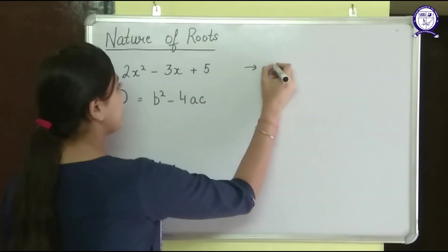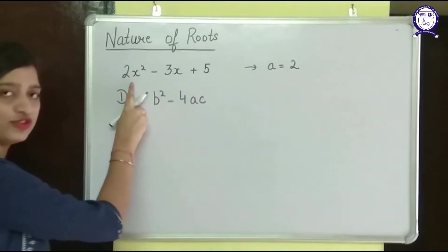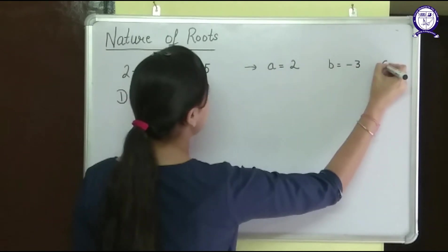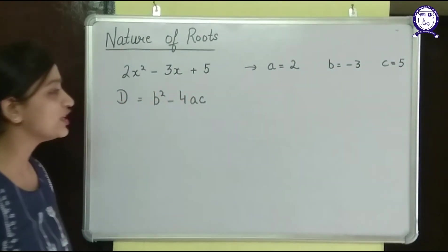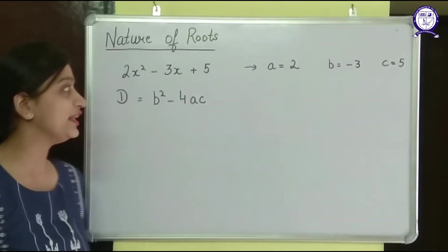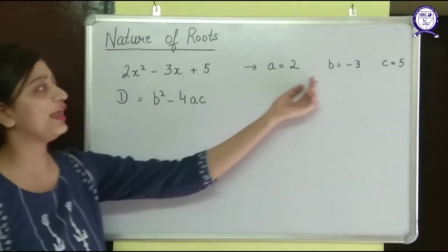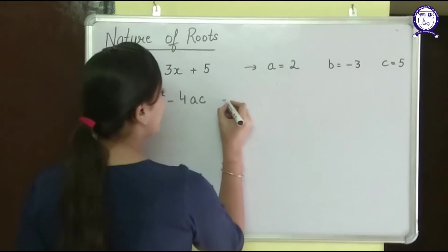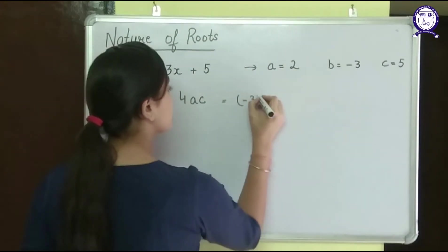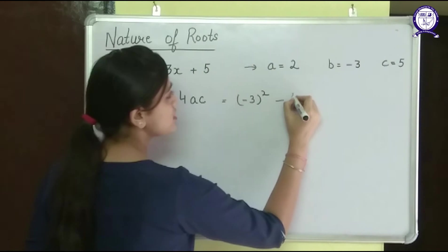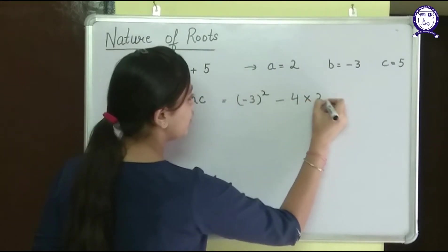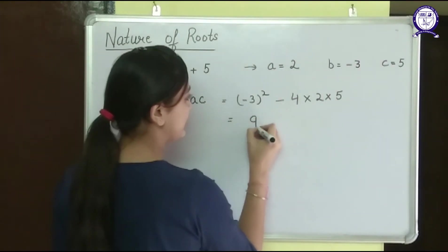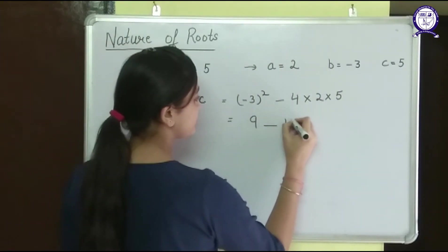So a is 2 — the coefficient of x squared — b is minus 3, and c is 5. If you know the general form of the quadratic equation, you can easily write the values of a, b, and c. Now I will put these values into the formula: it will be minus 3 squared minus 4 into 2 into 5.